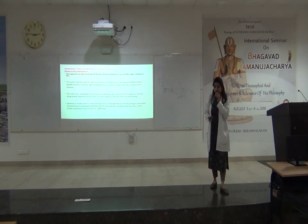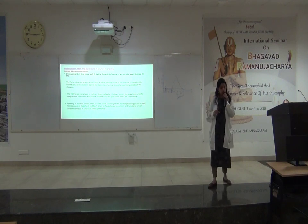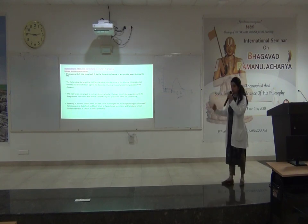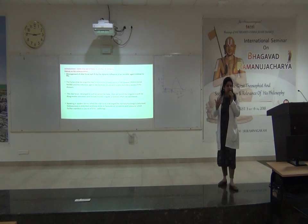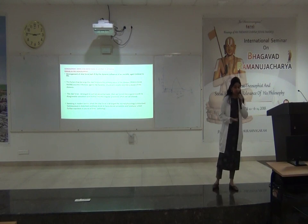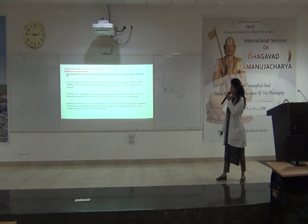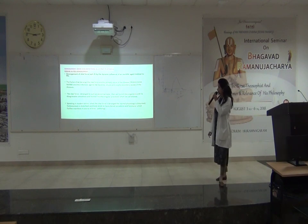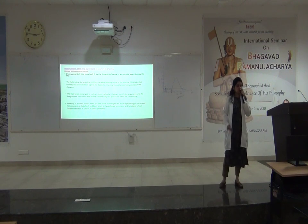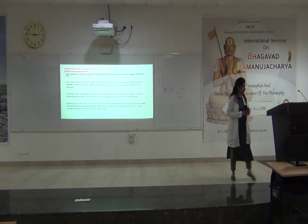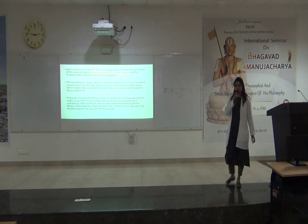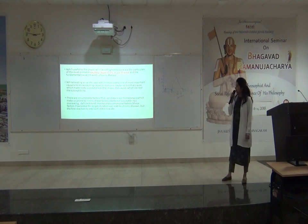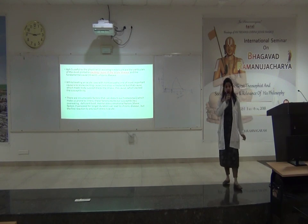In modern terms, when the vital force is deranged, normal physiology is disturbed — homeostasis is disturbed — and the body tends to have altered sensations and functions, which in course of time manifest, magnify, and get into pathology. In aphorism number 5, there is something called the exciting cause, which is responsible for an acute disease. It is the one which makes the body susceptible to illness — this can explain why everyone did not get COVID-19.